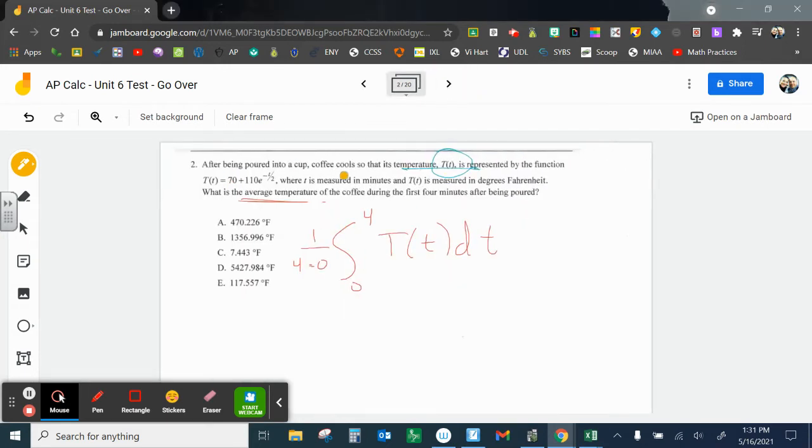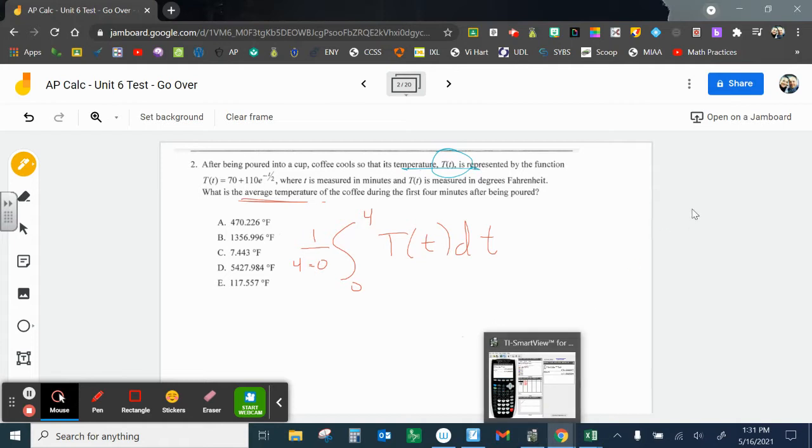For number 2, after being poured into a cup, coffee cools so the temperature at time t is represented by the function T(t), where t is measured in minutes, and T(t) is measured in degrees Fahrenheit. What is the average temperature? So I'm going to find the average value of the function over the first 4 minutes. So it's the integral from 0 to 4 of T(t) dt, and then all over 1 over 4.